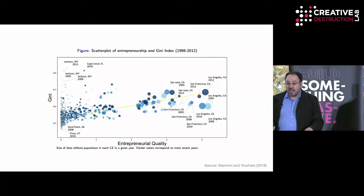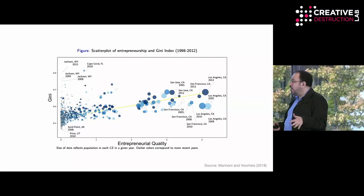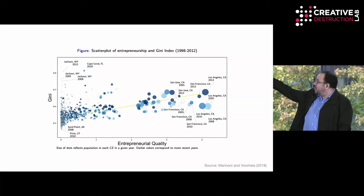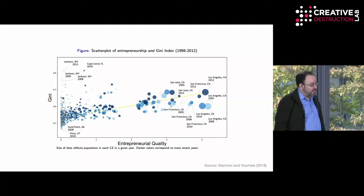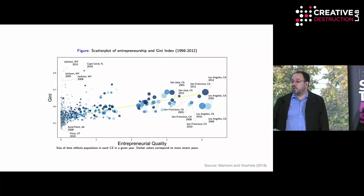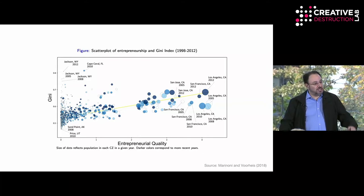I actually had a student look at this to see whether it's actually true that he was creating economic inequality because it wasn't 100% obvious. Astrid Marinoni, a PhD student on the job market, actually looked at things across the United States and showed there is a correlation. Places where you have higher entrepreneurial quality and more ventures being done actually do end up having more inequality on a variety of measures, so that does actually happen.